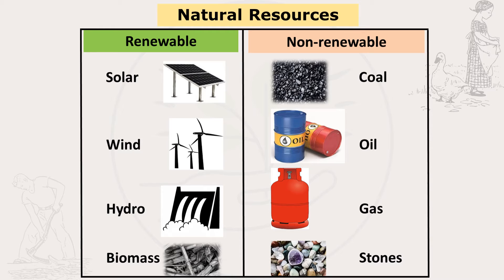When we talk of renewable resources, we are talking about resources that can be replaced naturally in a short period of time once they are used up. These include solar energy, wind, water, and biomass. Then we have non-renewable resources — these are resources that cannot be replaced in a short period of time, such as coal, oil, gases, and stones.